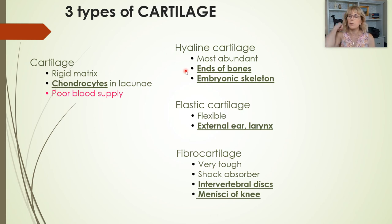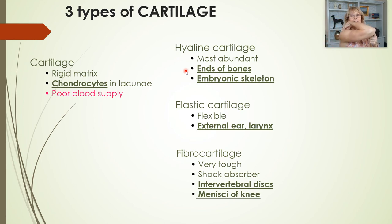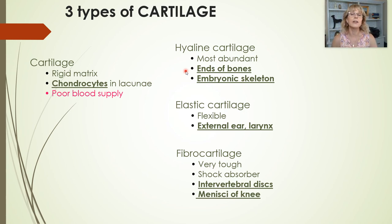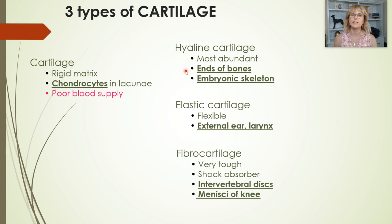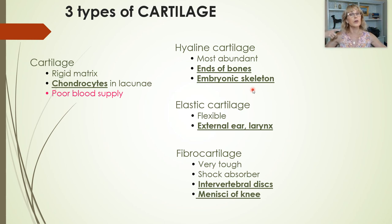Hyaline cartilage is found at the ends of all of our bones. Wherever a bone joins another bone, you are likely to find hyaline cartilage, which makes joint movement smooth with a little bit of sponginess. When you were still inside your mother and your skeleton was first forming, the first version of all of your bones was made out of hyaline cartilage.